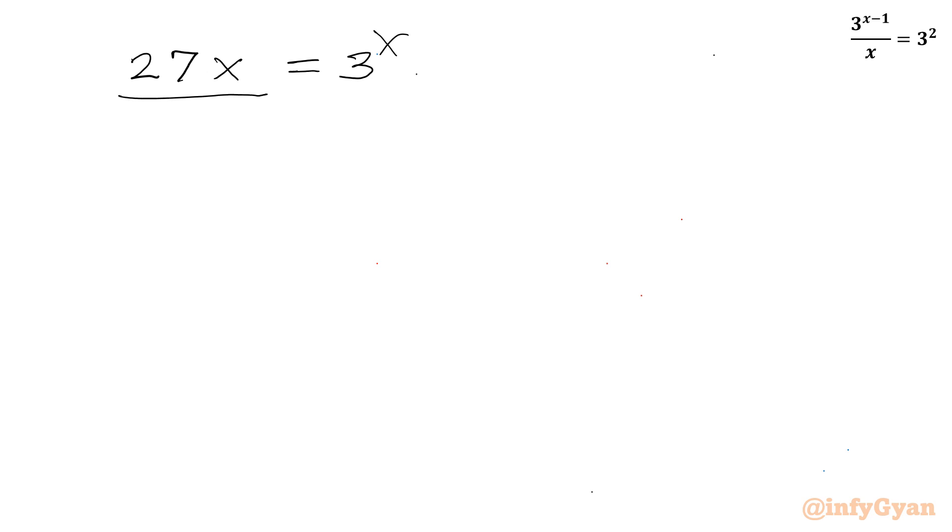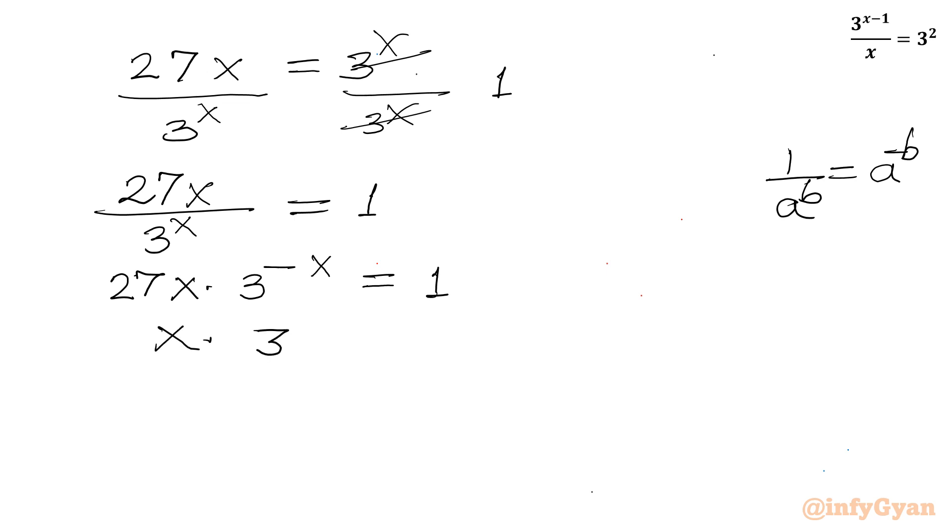Now I will be dividing both sides by 3 to the power of x. So the right hand side will be 1 now, and the left hand side is 27x over 3 to the power of x equals 1. Now we know that 1 over a to the power of b can be written as a to the power of negative b. So 27 times x times 3 to the power of minus x equals 1. Dividing both sides by 27, x times 3 to the power of minus x will be 1 over 27.